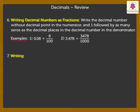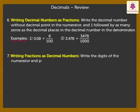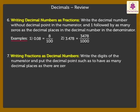Writing fractions as decimal numbers: Write the digits of the numerator and put the decimal point such as to have as many decimal places as there are zeros in the denominator of the given fraction. For example...